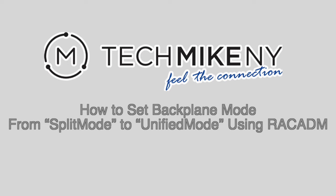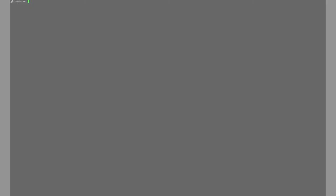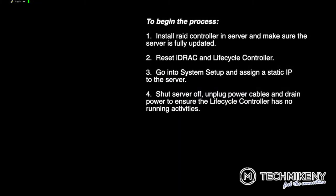If you have tried and failed to change a server from split to unified mode through iDRAC, this tutorial will show you how to switch the backplane mode using rack atom. To begin the process, install the RAID controller in the server and make sure everything is fully updated. Reset iDRAC and the lifecycle controller, go into system setup, and assign a static IP to the server.